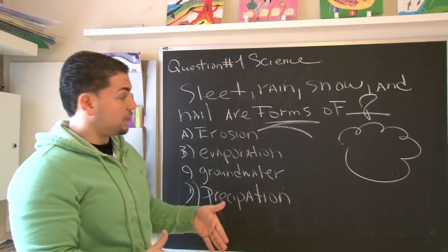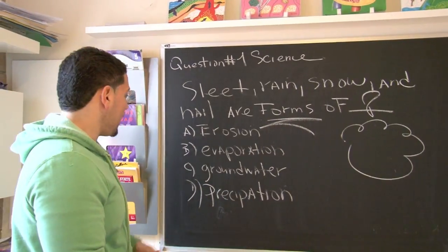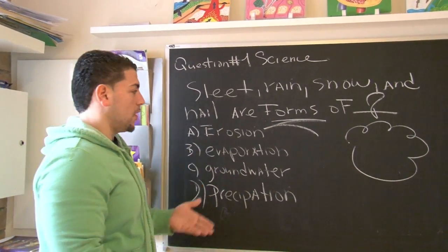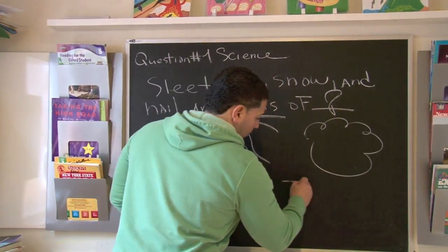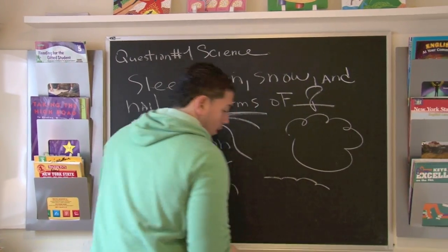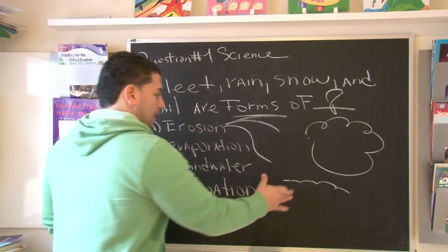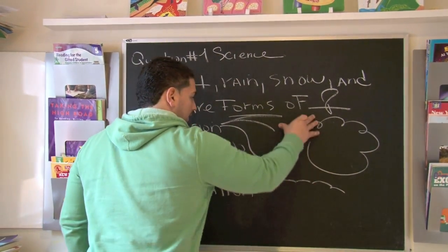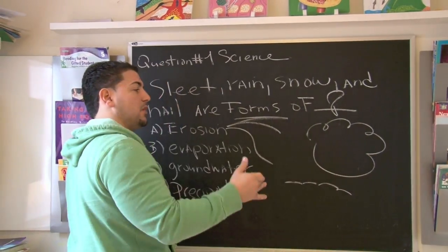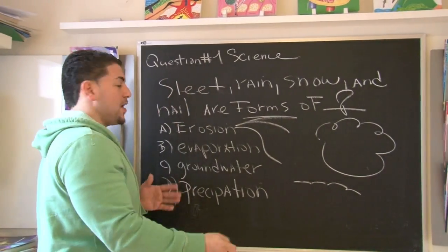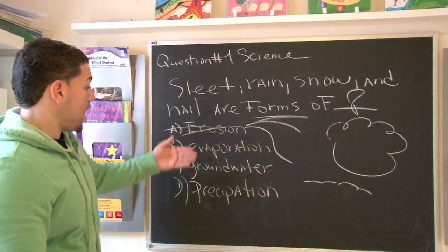Try not to get nervous when they give you four choices. The first choice says erosion. Well, we know that erosion has to do with the ground, or the separation of the ground. The ground and the sky are two different places in the atmosphere, so right away erosion is gone.